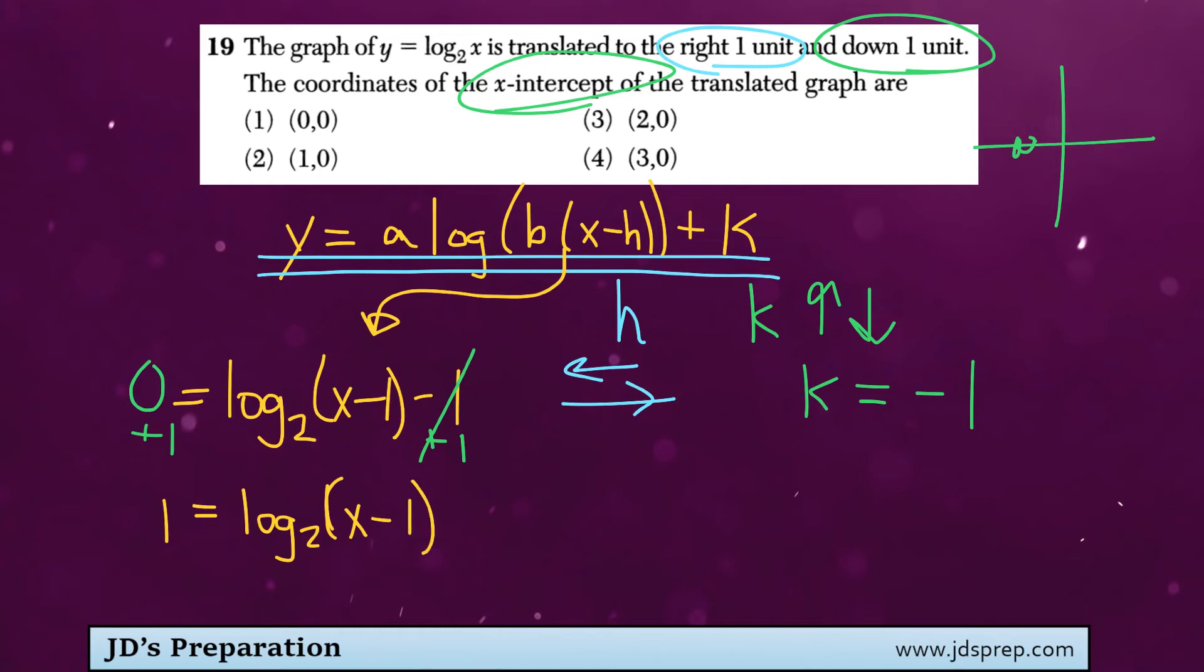Now at this point, I'm going to rewrite this equation so that it's an exponential function instead. And so that would be written as our base here, 2, to the power of 1 is equal to x minus 1.